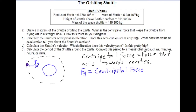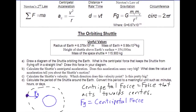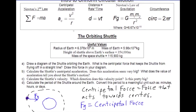Next, we draw that force on the diagram, pointing it inward, because the centripetal force points perpendicular to the path and directly towards the center. For part B, we calculate the shuttle's centripetal acceleration. There are multiple ways to do this, but looking at our equations, I'm going to use Newton's second law: net force equals mass times acceleration.